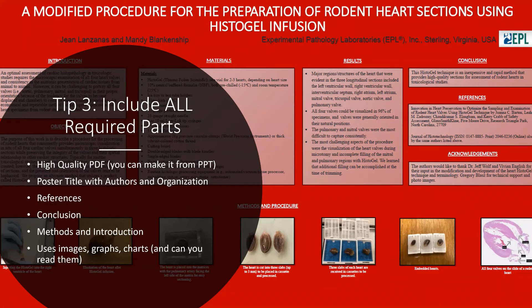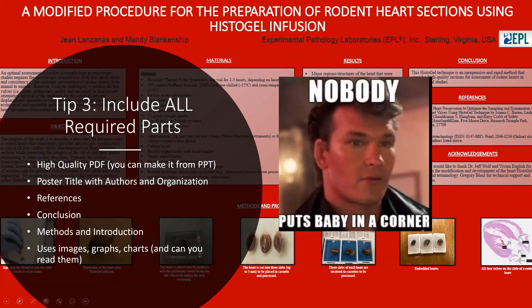The third tip is to include everything. The poster team provides all the details about what you should include in your poster. Some of these things are submitting a high-quality poster PDF, having a poster title with the title, authors, and author affiliations. Make sure you include references, supporting data where appropriate, introduction, and of course that conclusion — that wonderfully highlighted larger-than-life conclusion. Seriously, don't put baby in a corner. You'll also want to include charts, graphs, or photos — maybe all three. But make sure that no matter what kind of graphic you include, they are easy to read.